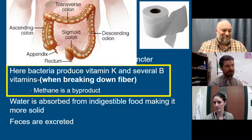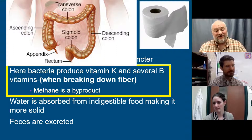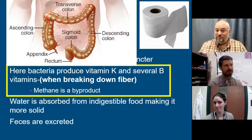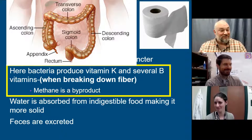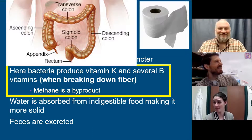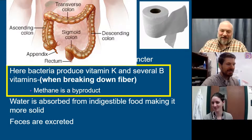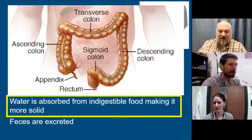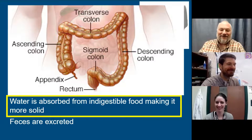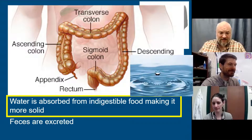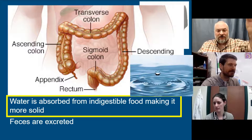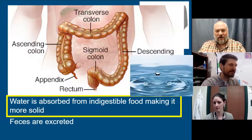A byproduct of what those bacteria do is methane, which produces most of the gas we let out — sometimes silently, sometimes not so silently. The other major job of the large intestine, besides digesting fiber, is absorbing most of the water — this happens via osmosis. We don't want to absorb water earlier because we need it to help move leftovers through, but by the time we want to get rid of waste, we absorb that water back so we don't lose it.